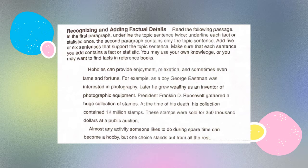Let's read the paragraphs and follow the directions. "Hobbies can provide enjoyment, relaxation, and sometimes even fame and fortune. For example, as a boy, George Eastman was interested in photography. Later, he grew wealthy as an inventor of photographic equipment. President Franklin D. Roosevelt gathered a huge collection of stamps. At the time of his death, his collection contained one and a quarter million stamps. These stamps were sold for $250,000 at a public auction. Almost any activity someone likes to do during spare time can become a hobby. But one choice stands out from all the rest."